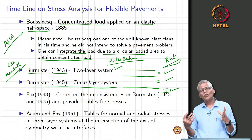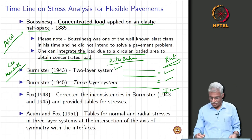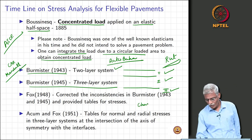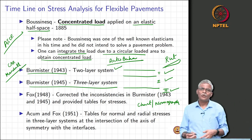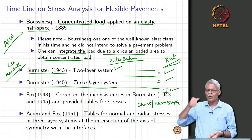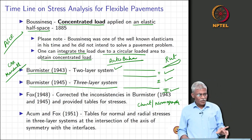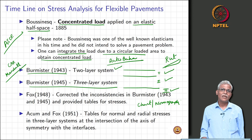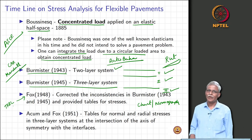When Burmister's theory was published, everybody was thrilled. But these are detailed, elaborate calculations done without a computer. Most of the calculations had to be translated into charts — nomographs or tables of values — so that you could use a mechanical calculator, interpolate, and compute. Then in 1948, Fox from TRRL (Transportation Road Research Laboratory, UK) addressed some minor calculation issues and provided a complete table of stresses.